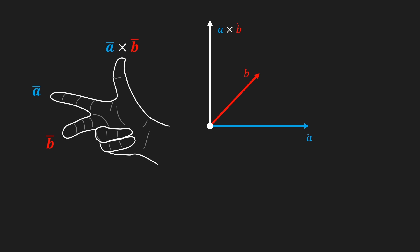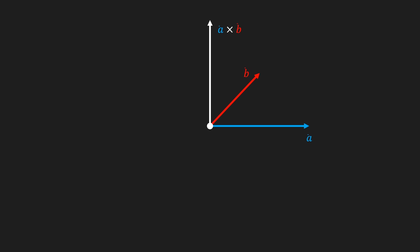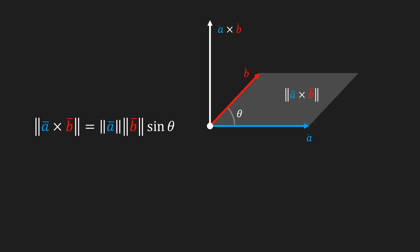You can visualize this using the right hand rule. If you take your right hand and point your index finger in the direction of vector a, your middle finger in the direction of vector b, then your thumb will point in the direction of their cross product. To show some of the properties of the cross product, I'm going to introduce this alternative formula that says that the length of the cross product of vector a and b is equal to the length of vector a times the length of vector b times the sine of theta, where theta is the angle between vector a and b. Another way to think of the length of the cross product of a and b is to think of it as the area of the parallelogram between vector a and b.